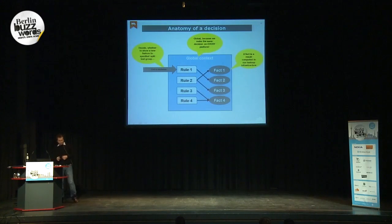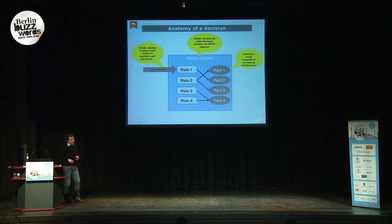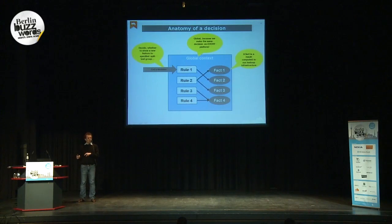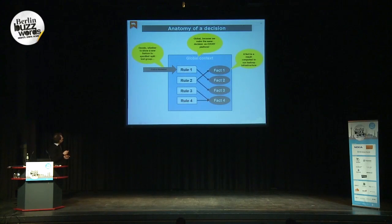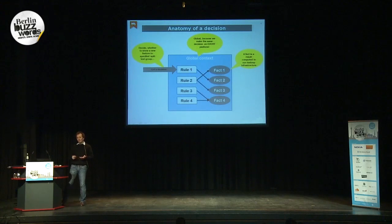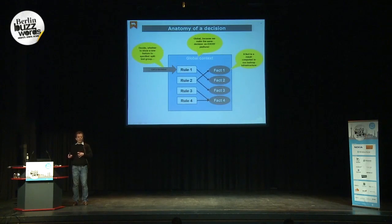Decisions are mainly done on our platform in three different ways. A decision is something like: is a user in a split test group, and is it able to see a different feature? It's also necessary to analyze the events of the different feature showed to the user. Global context means every decision is the same on mobile, on social, and on our own platform — that's not so common in the industry right now. There are many solutions for one platform, but not for the whole cross-platform experience.